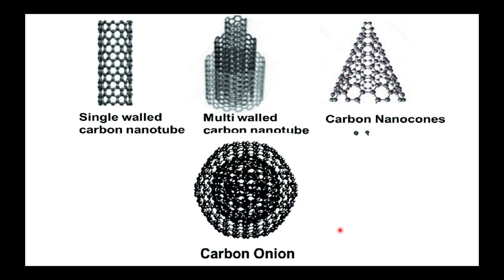Some other structures are also shown. Single-walled carbon nanotubes have just one wall. In multi-walled carbon nanotubes, we can see multiple walls — one, two, three walls — hence they are called multi-walled carbon nanotubes.